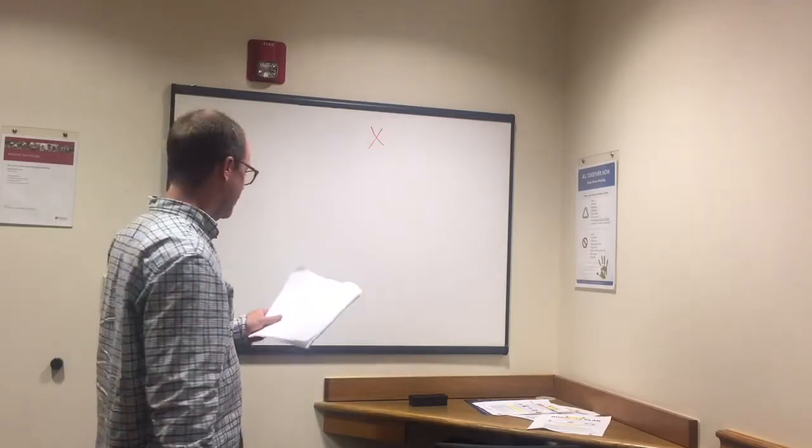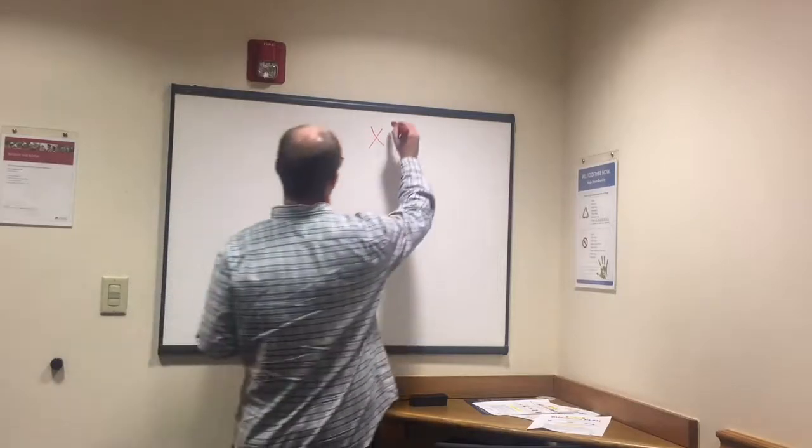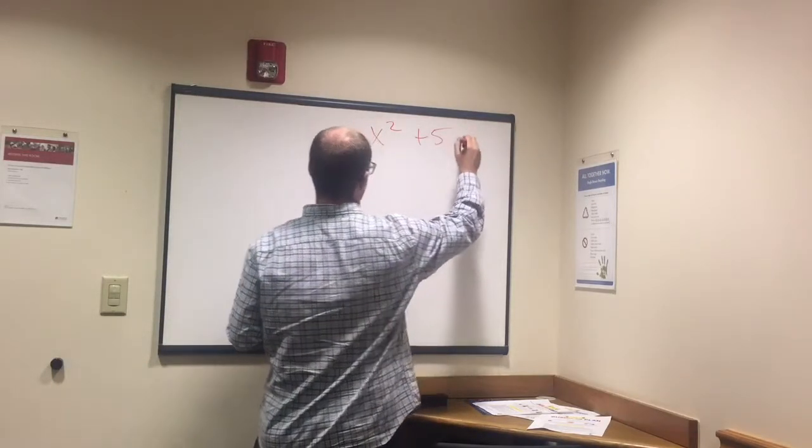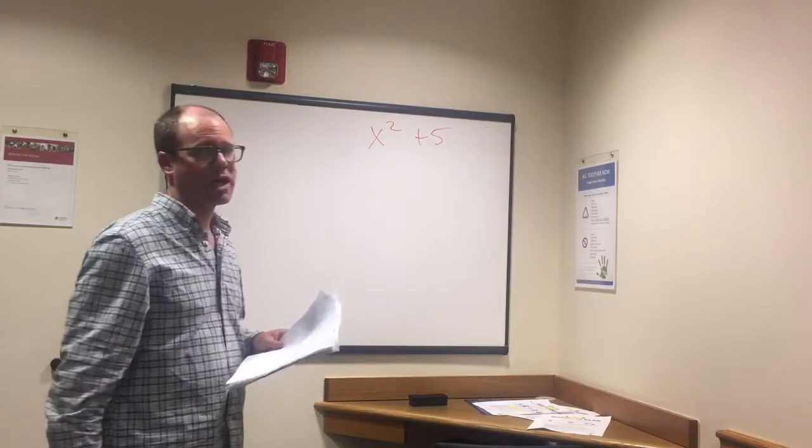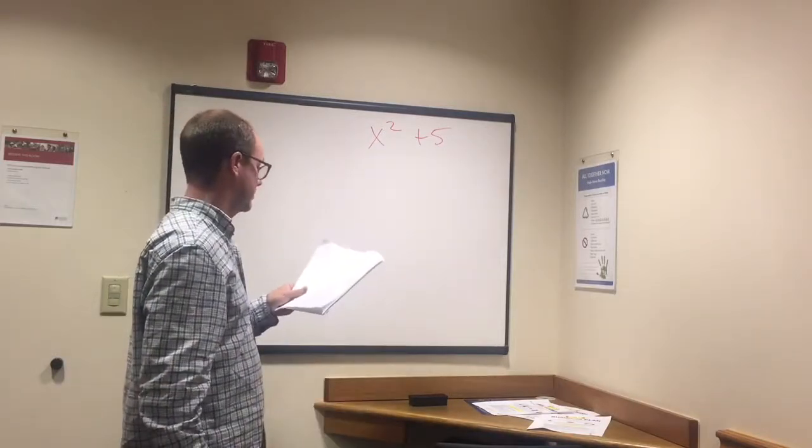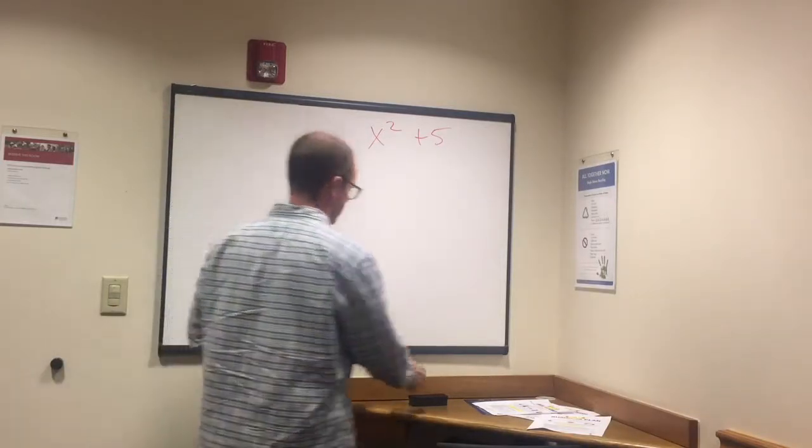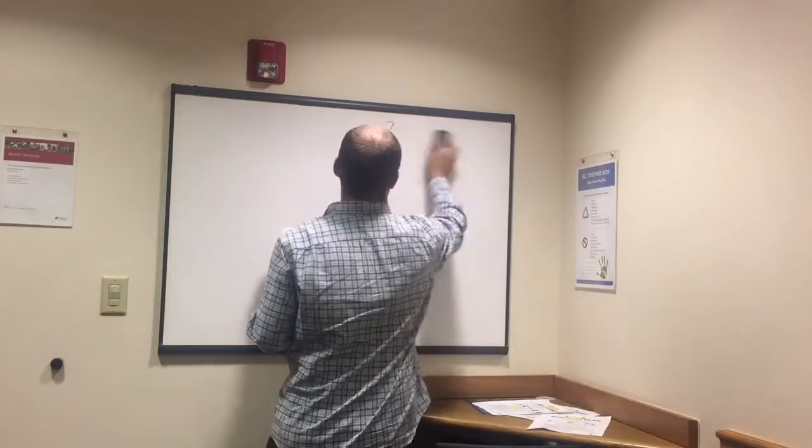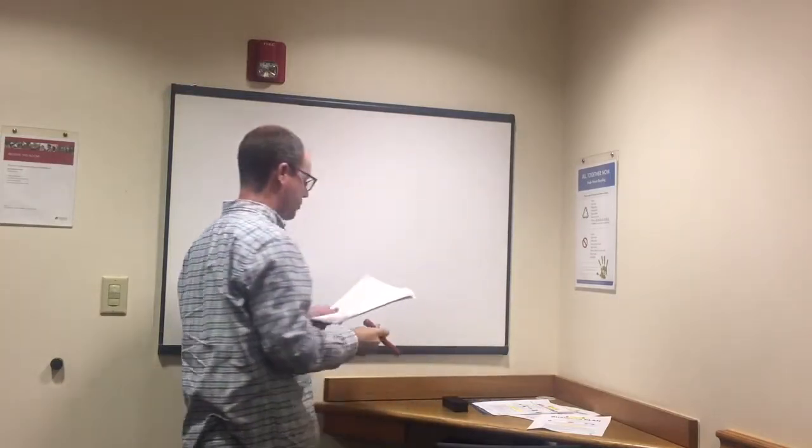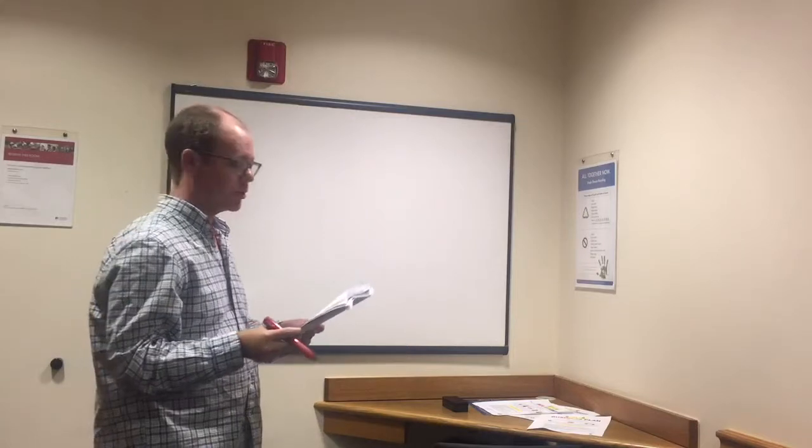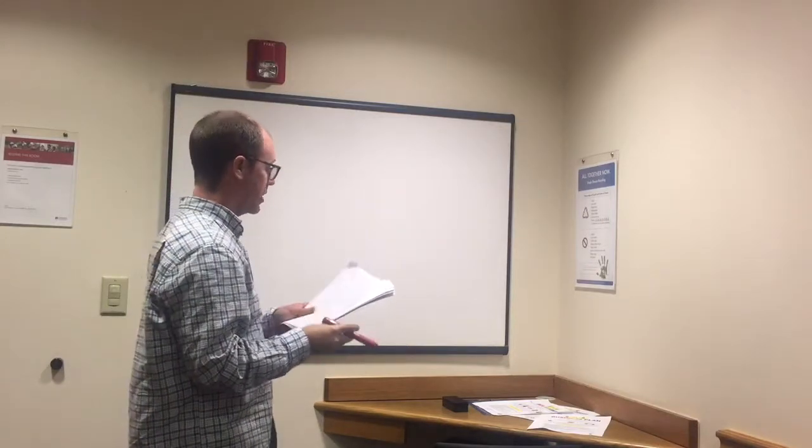As opposed to x squared plus 5, what would we call that? A binomial, right? Two terms. Pretty simple. Monomial means one term, binomial two terms.